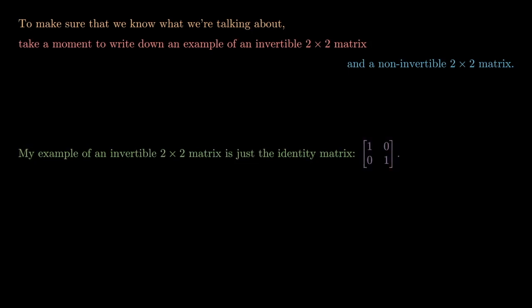My example of an invertible 2×2 matrix is just the identity with 1, 0, 0, 1. My example of a non-invertible 2×2 matrix is just the zero matrix, the matrix with zeros in all columns and all rows.